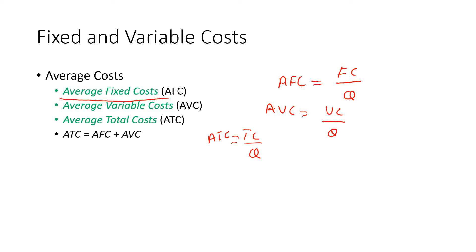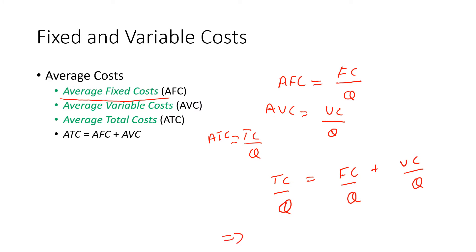We also know that total cost equals fixed cost plus variable cost. Dividing both sides by Q, we get: TC/Q = FC/Q + VC/Q. This implies that Average Total Cost = Average Fixed Cost + Average Variable Cost.